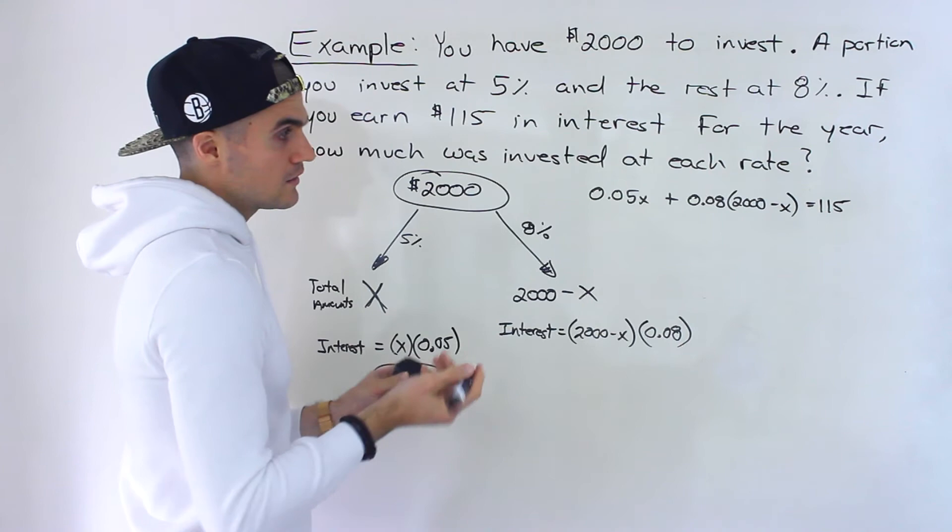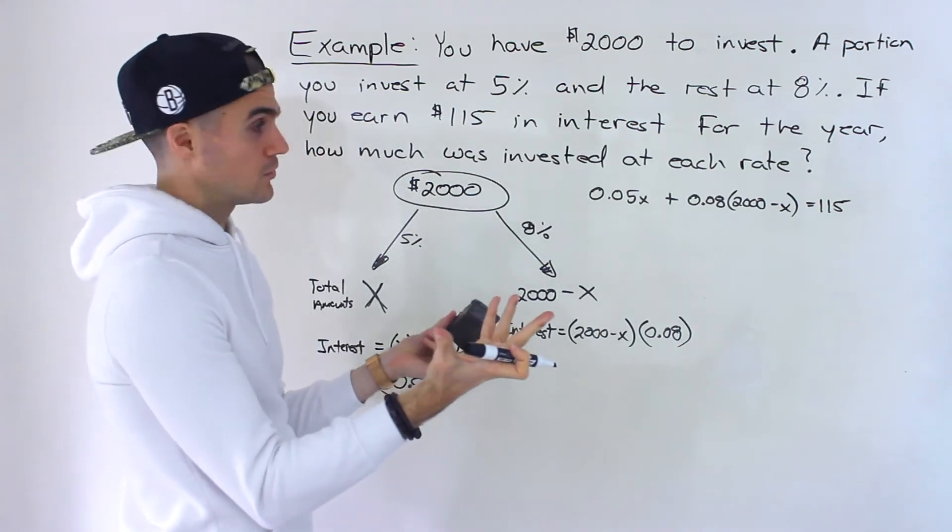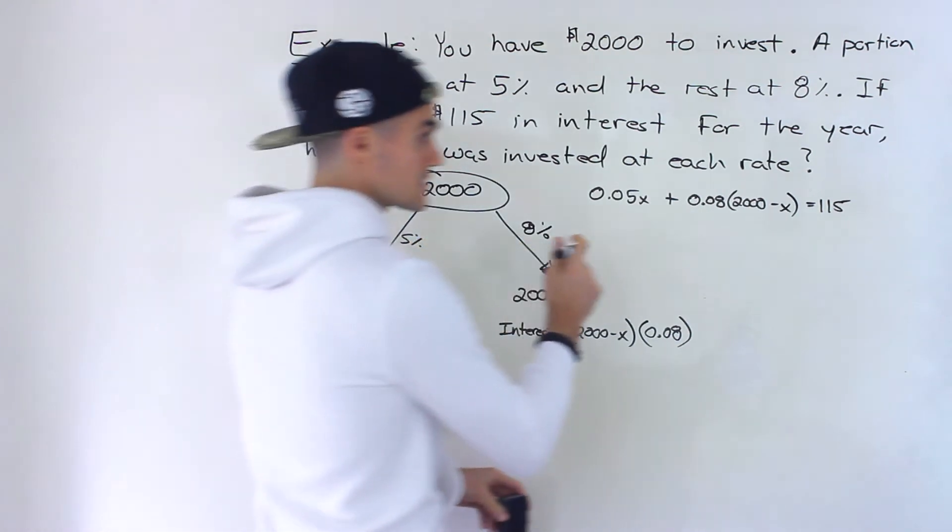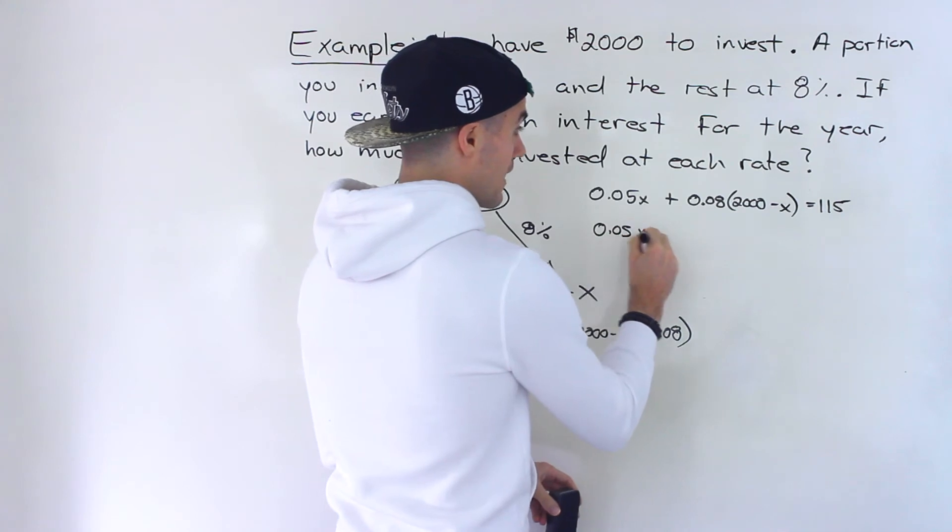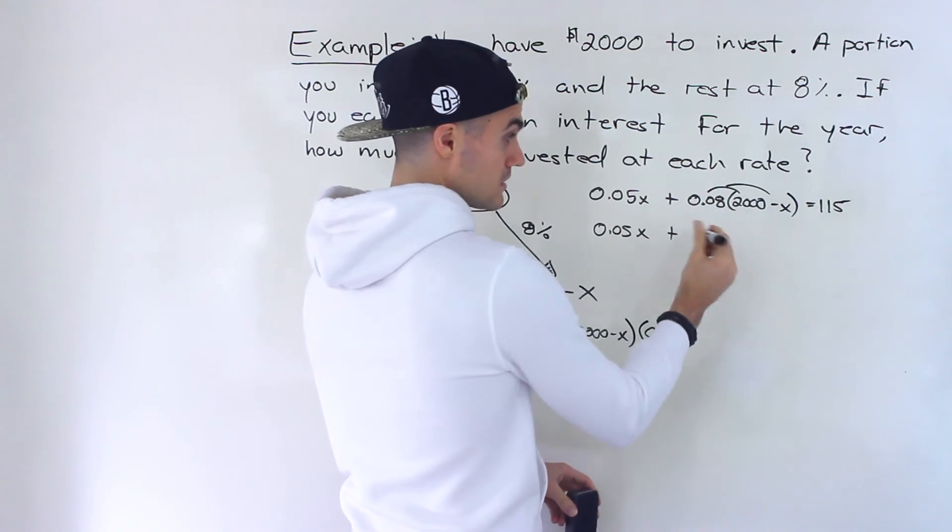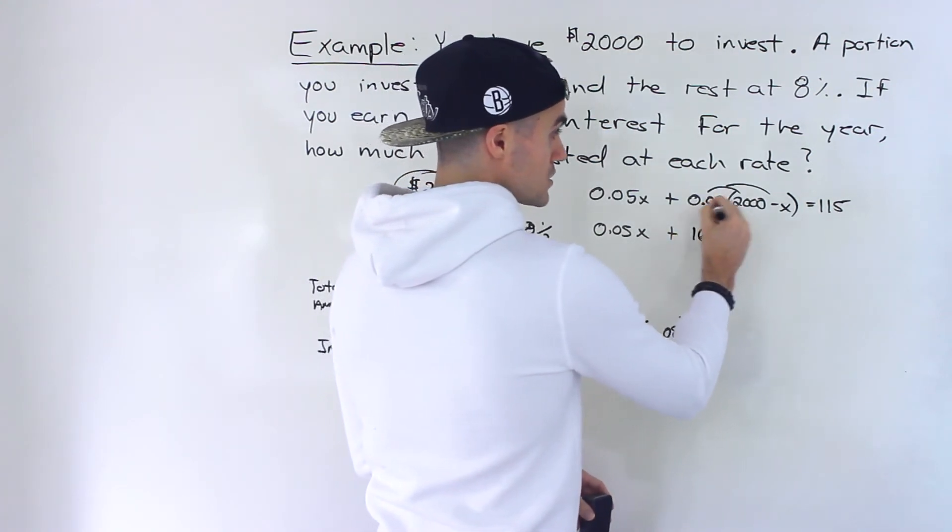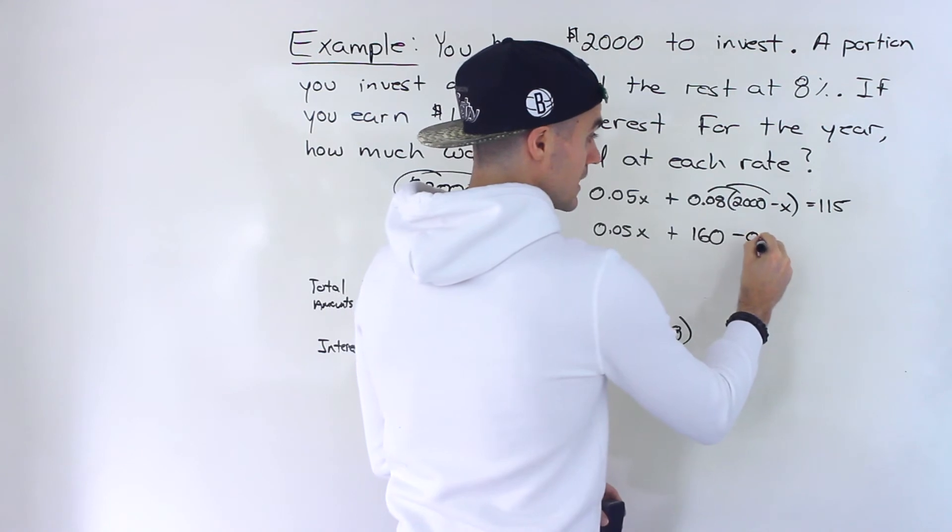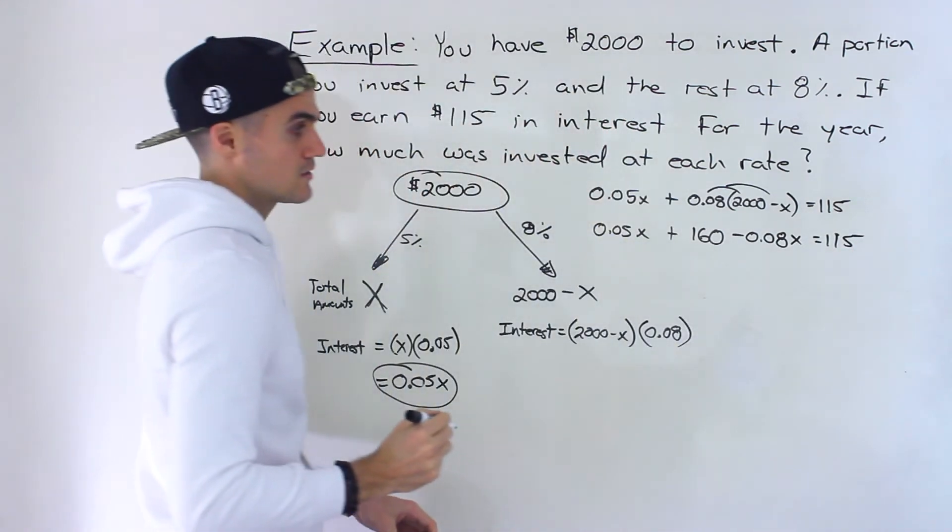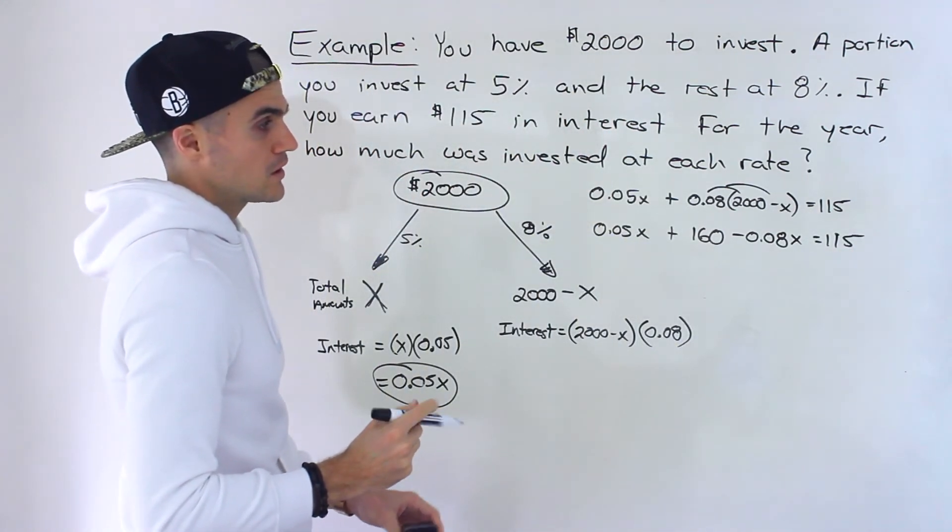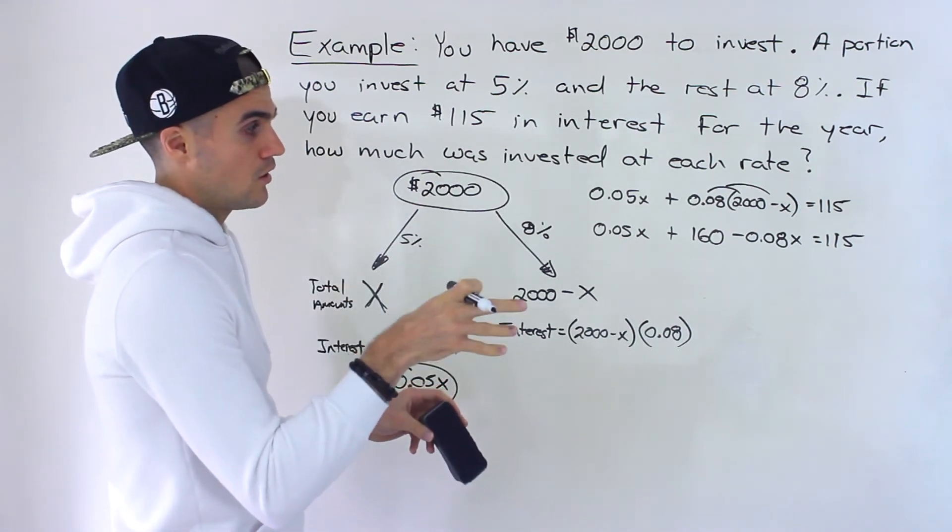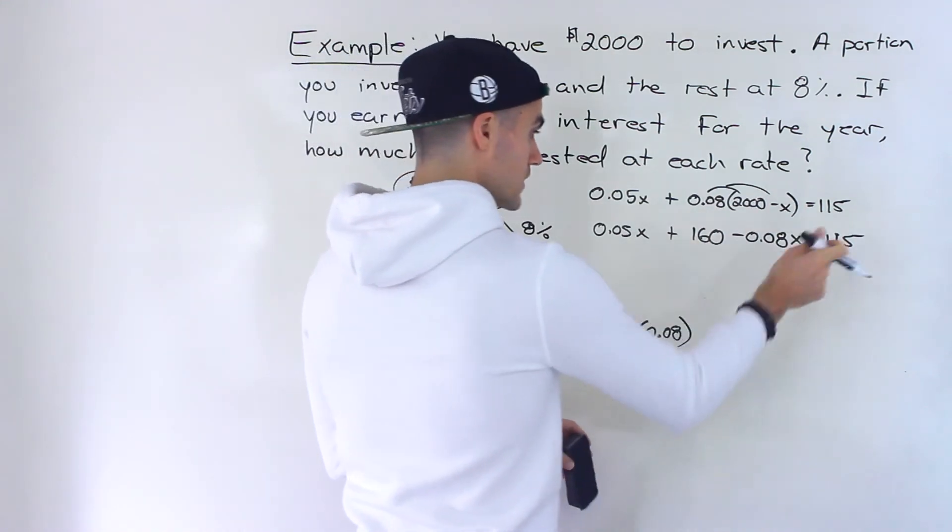And so from here, notice we have an equation with just one variable to solve, the X value, which is the amount that's invested at the 5%. So if we solve over here, we'll have 0.05X plus this, we got to distribute in the bracket. So 0.08 times 2,000 would give us 160. Then 0.08 times negative X would give us negative 0.08X. And that's going to be still 115, like that. Then from here, we want to bring all of the expressions with a variable to one side and then all of the numbers to the other. So what I'm going to do is I'm actually going to bring the 160 over.